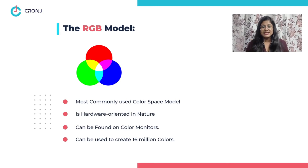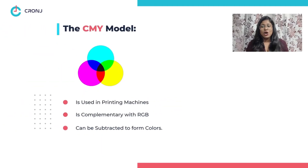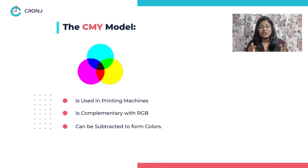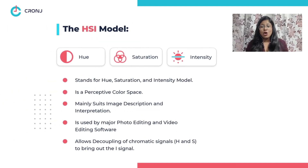CMY, or the Cyan, Magenta, and Yellow model, is most commonly used for printing machines — for printing newspapers, magazines, and more. It is complementary to RGB and colors can be subtracted to form new ones. For example, if you subtract one from R you will get C, if you subtract one from G you will get M, and if you subtract one from B you will get Y.